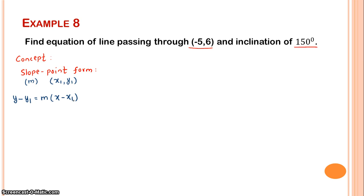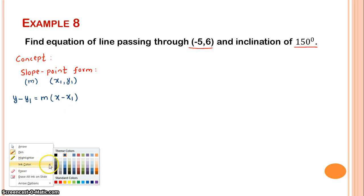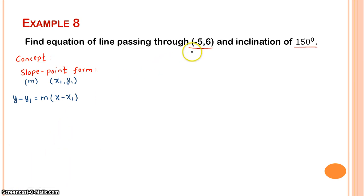So whenever you have slope and point, you can find out the equation of line using this equation: y - y₁ = m(x - x₁). Clear? In this question, one point is given and inclination theta is given.